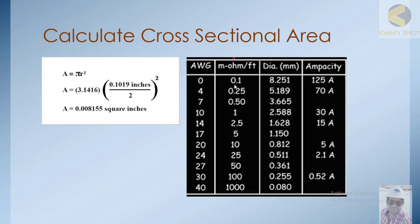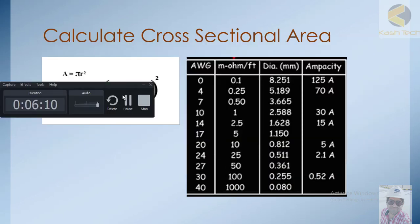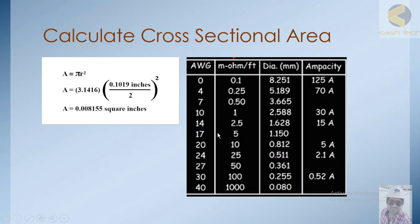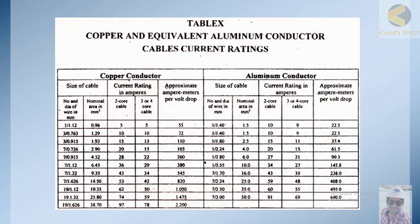The thumb rule is: if the resistance of any cable is less, it can carry more current. To reduce resistance, you increase the diameter. As diameter increases, ampacity increases. Here is a table showing copper and aluminum conductor cable current ratings, listing cable size, nominal area, number of cores — two cores or three/four cores — and the corresponding current ratings in amperes.